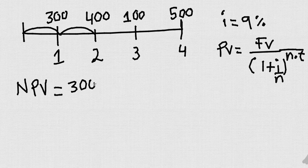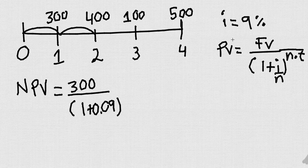So look, I have 300, which is a future value, because remember I'm bringing everything to year zero, over one plus nine percent, which you have to change the interest by dividing it by 100, that way you get rid of the percentage.